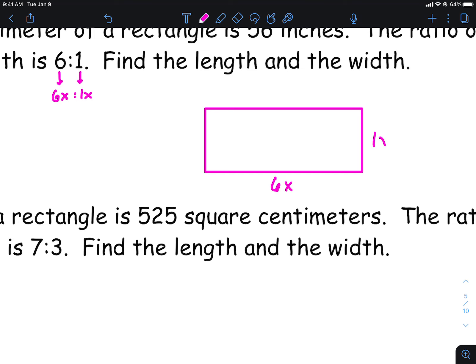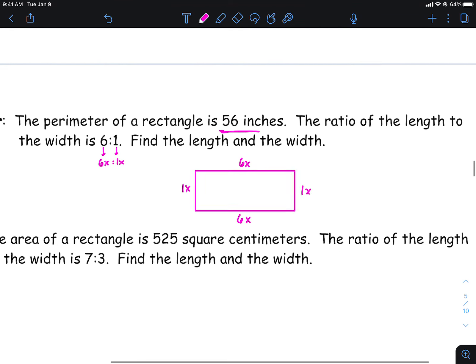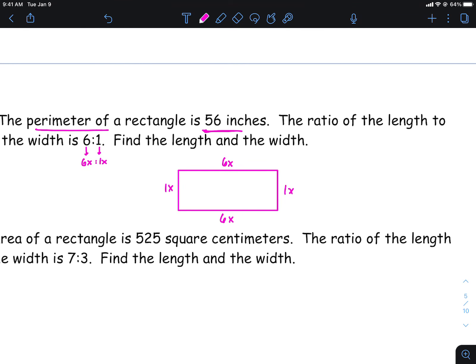So let's put 6x there, 1x there. Technically you've got another 6x right there, and then a 1x right here. And when you're doing a perimeter, perimeter means you need to add up all the sides. All the sides add to 56. So I'm going to write this 6x plus 1x plus 6x plus 1x equals 56.